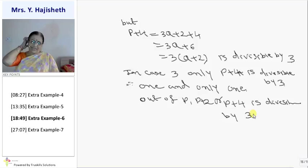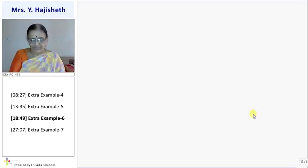So by taking all 3 cases, I proved 1 and only 1 out of p, p plus 2, and p plus 4 is divisible by 3. Such a big sum.